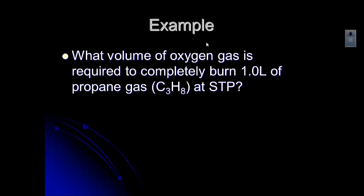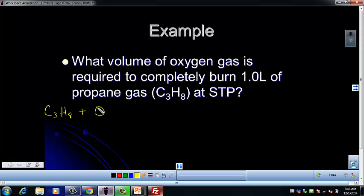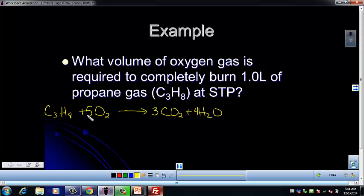Let's take a look at our first example. Remember that with stoichiometry problems, our first step is always to set up the balanced chemical reaction. In this problem, we're being asked how much oxygen gas is required to completely burn a liter of propane. So we've got propane and oxygen burning — that is a combustion reaction, and its products are going to be CO2 and H2O. To balance: put a 3 in front of CO2 for carbon, a 4 in front of H2O for hydrogen, then 6 plus 4 oxygens on the right gives 10, so put a 5 in front of O2.